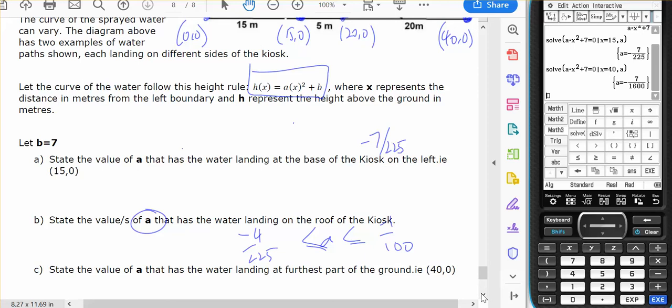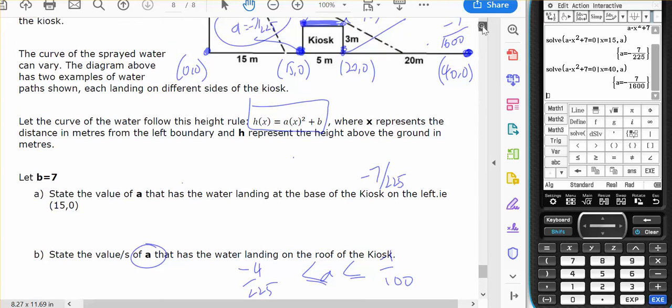Value of a for the water landing the furthest part of the ground. The furthest part of the ground is landing here. So negative seven on 1600.